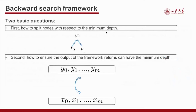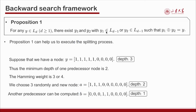We solve two fundamental problems. The first is how to split nodes with respect to minimum depth — for example, how to split Y0 into T0 and T1. The second is how to ensure the framework output has minimum depth. Proposition 1 helps execute the splitting process: for any node Y, we can always find two nodes with less depth to split Y. For example, given Y = (1,1,1,1,1,1,0) with depth 3, the minimum depth for a predecessor node is 2, requiring Hamming weight 3 or 4; we choose 3.